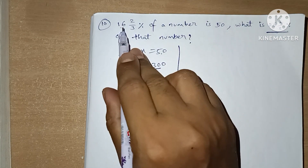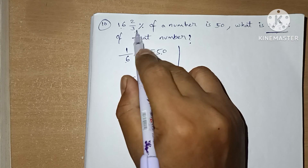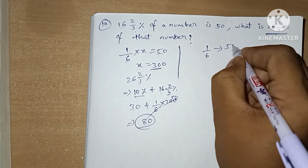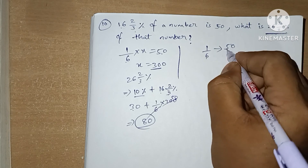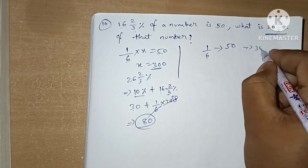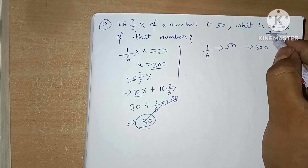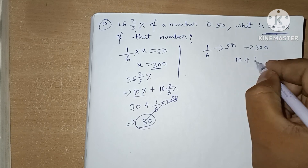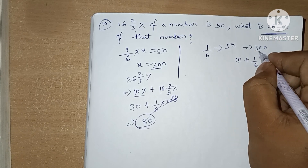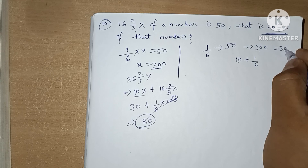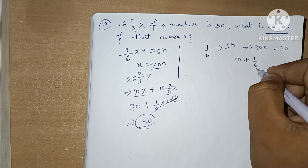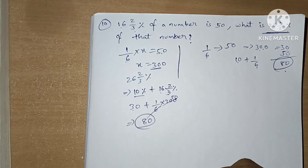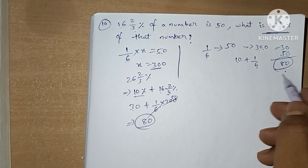For mind calculations: 16⅔% means 1/6, and 1/6 value is 50, so total is 300. We calculate 26⅔% as 10% plus 1/6. 10% of 300 is 30, and 1/6 of 300 is 50. So the answer is 30 plus 50, which is 80.